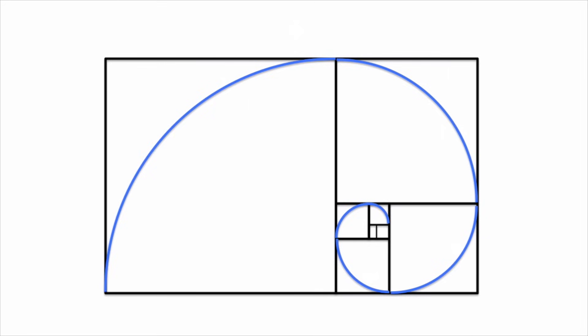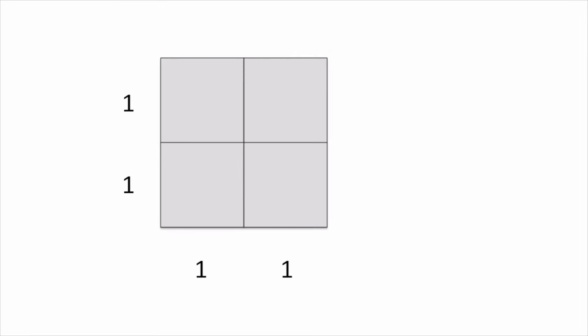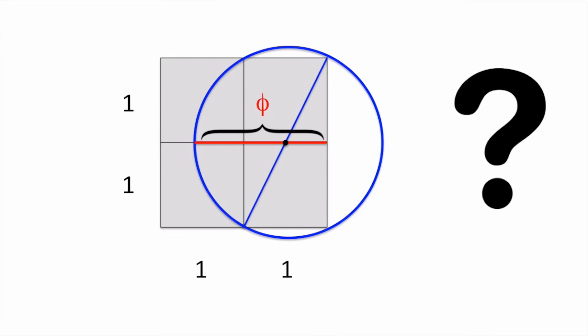But how can we construct Phi geometrically? Start with four 1 by 1 squares. Connect these two corners, then construct this circle. The length of the red segment is Phi. Can you see why this is true?